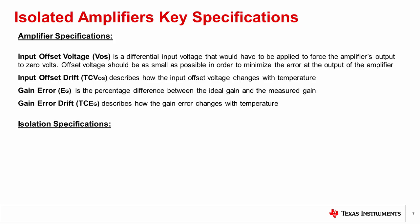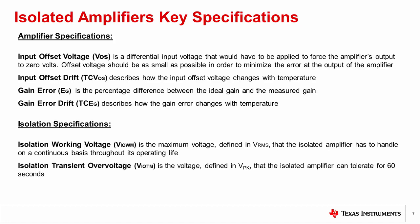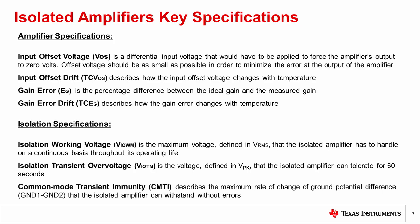Now we will go over some common isolation specifications. First we will consider isolation working voltage, which is the maximum voltage defined in volts RMS that the isolated amplifier has to handle on a continuous basis throughout its operating life. Next, isolation transient overvoltage is the voltage defined in volts peak that the isolated amplifier can tolerate for 60 seconds. Lastly, we have to define the common mode transient immunity, or CMTI, which describes the maximum rate of change of ground potential difference that the isolated amplifier can withstand without errors.